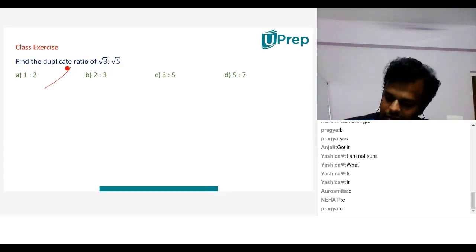So children, when I say duplicate. Yeah, the answer is option C children. So when I say duplicate ratio, what it means is suppose I have two numbers A and B. Let me repeat this once again for those who are not around. If I have two numbers A and B.